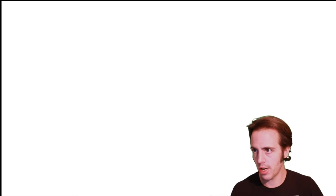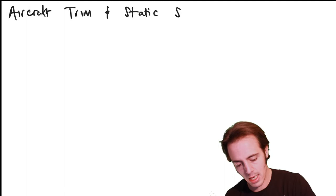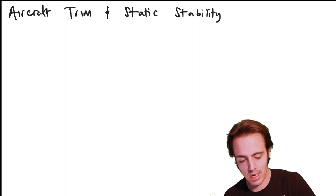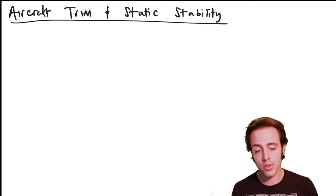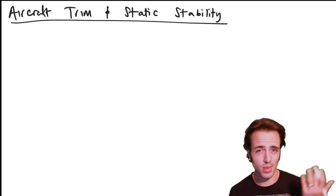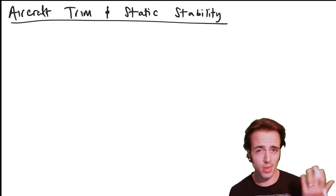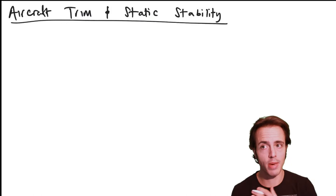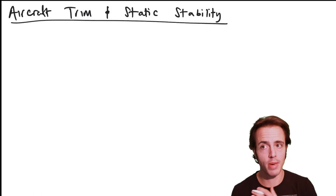Let's just start talking about aircraft trim and static stability. This is the second time I've recorded these lectures. Part of it is down to the nomenclature in this topic — specifically regarding moment coefficients — which can be a little confusing, and it's inconsistent between different textbooks. I'd originally started using a definition from one textbook and noticed it's not consistent between texts, so I'd rather rerecord these with consistent nomenclature throughout.